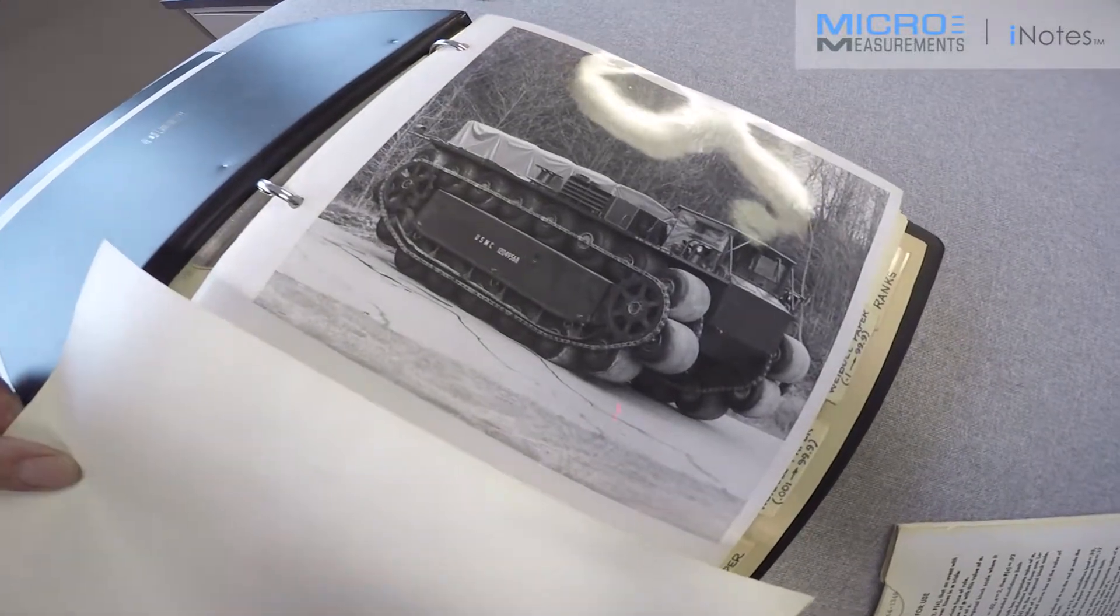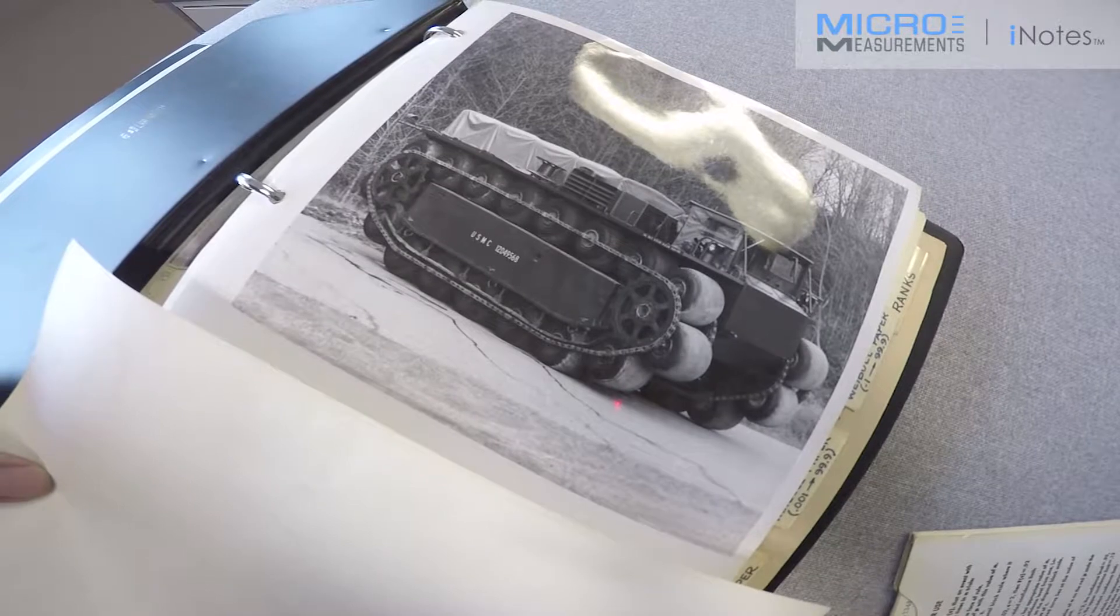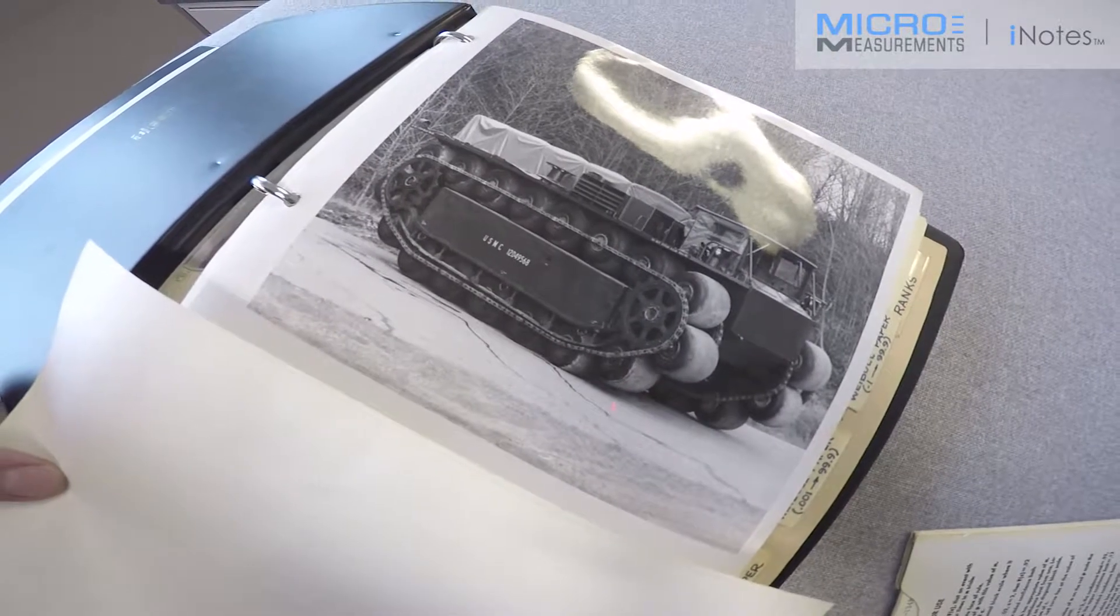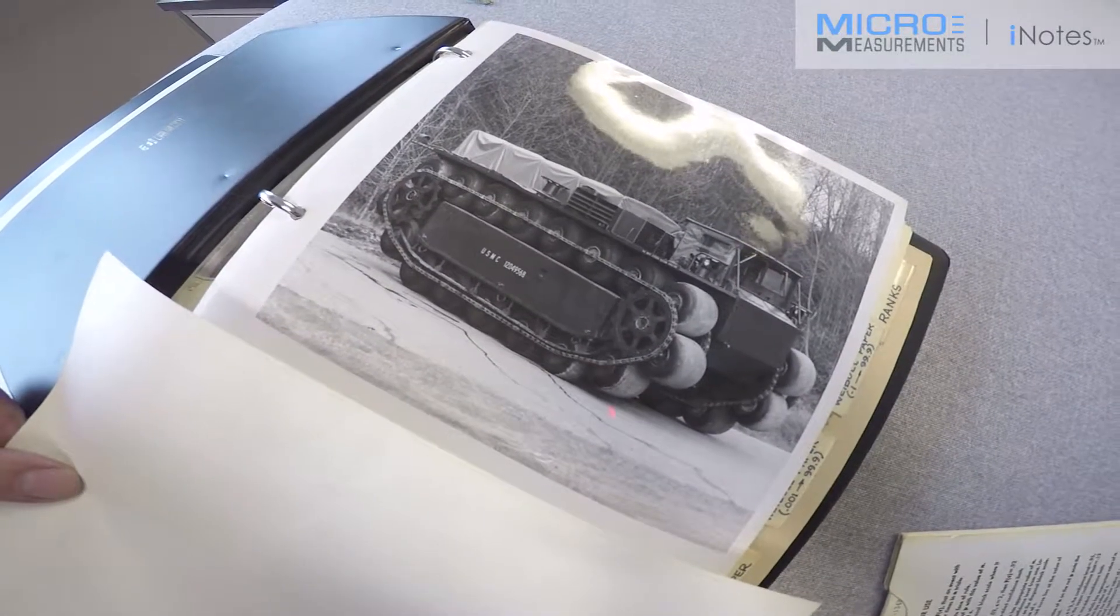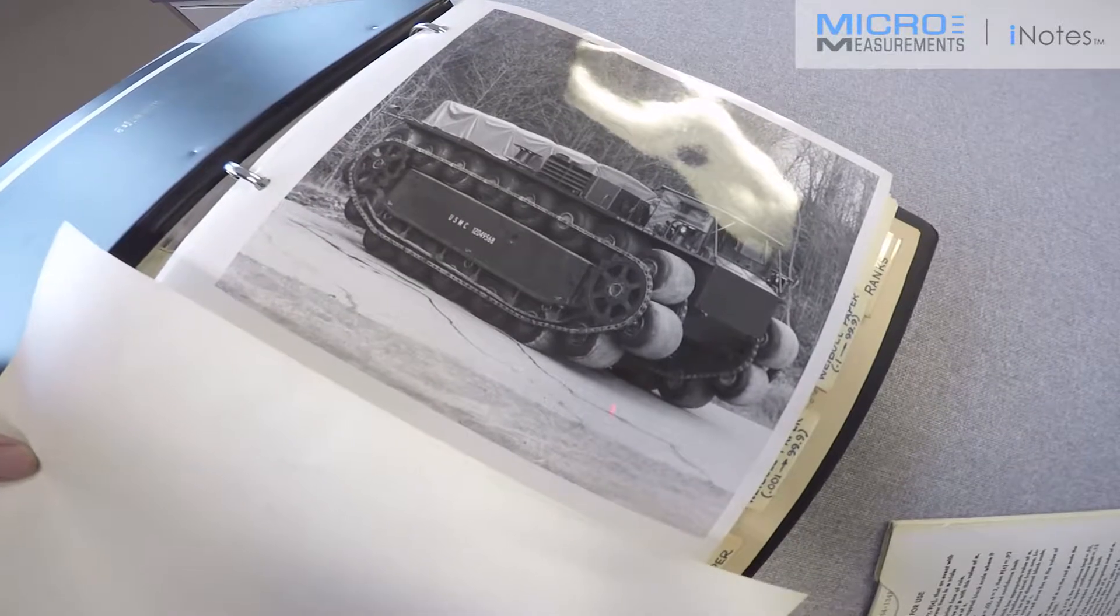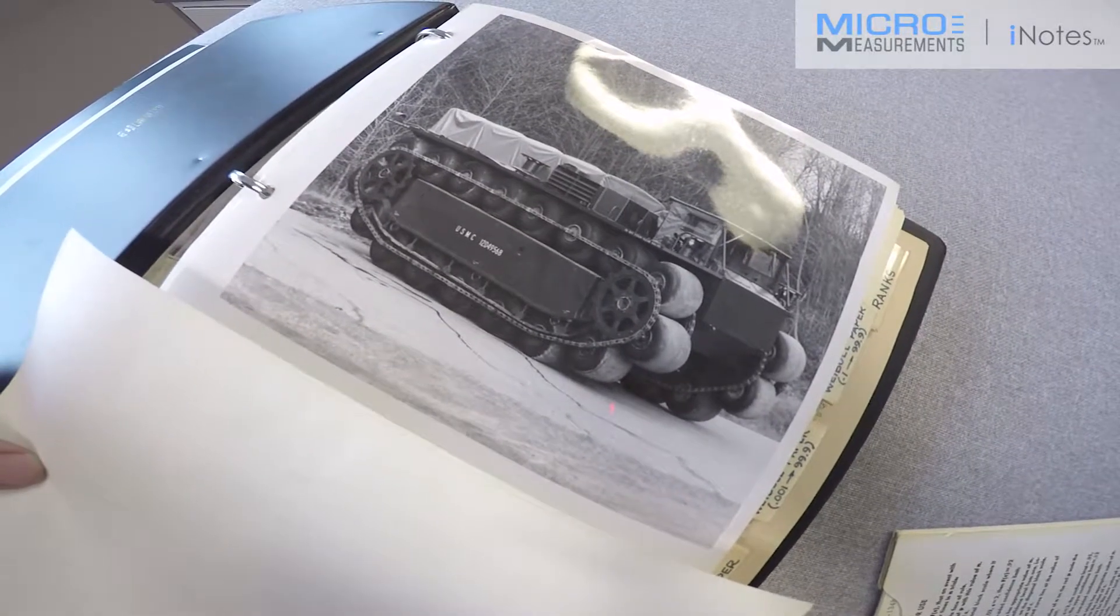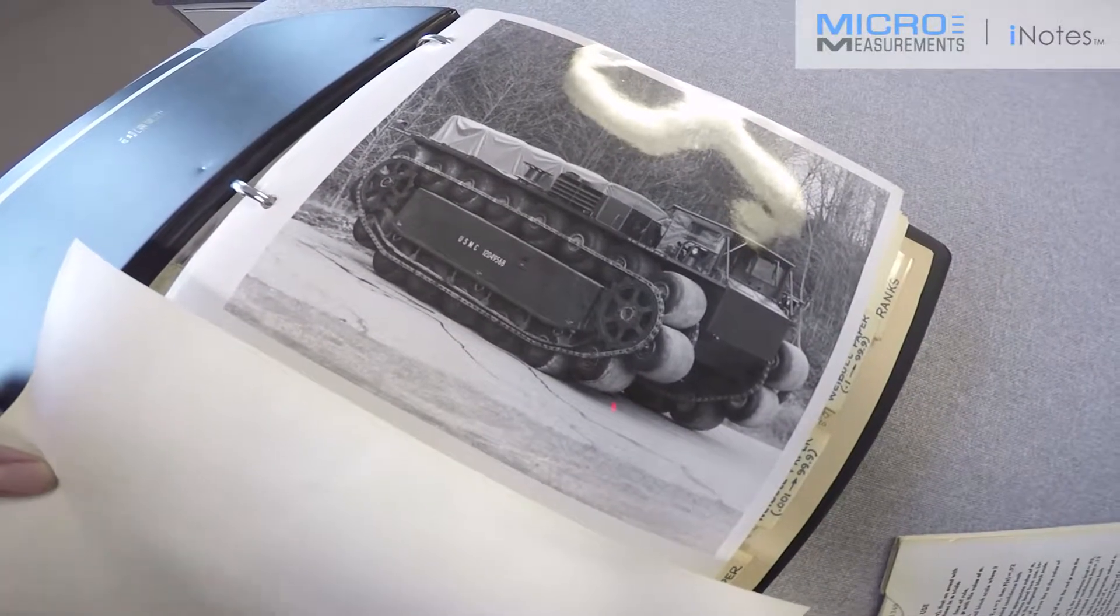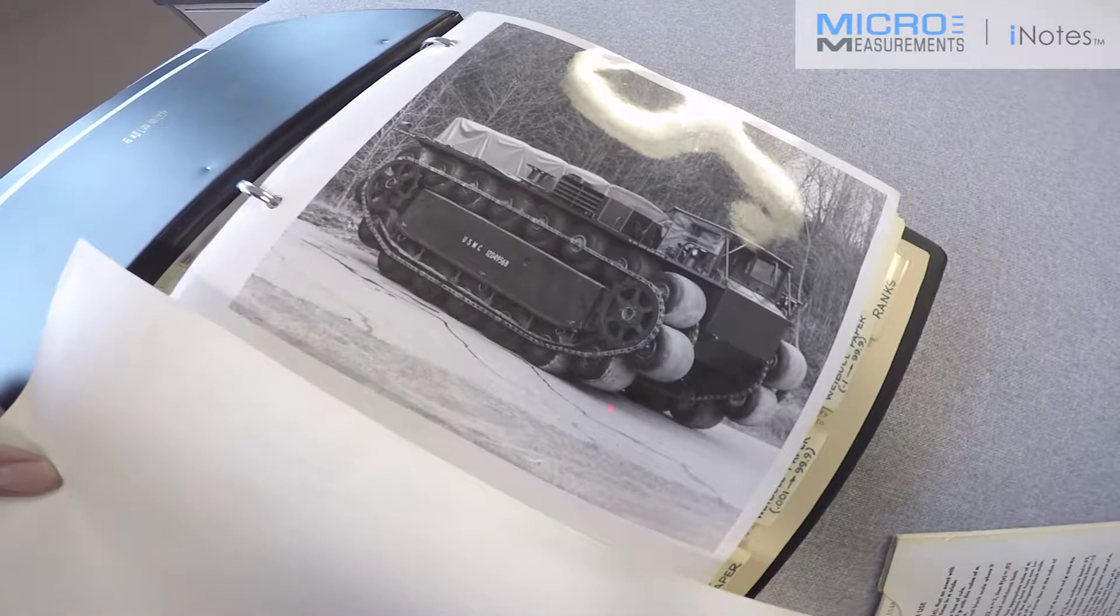We have what you might call an all-terrain vehicle here that was designed to go on hard surfaces or in the water or anything in between, including deep mud, by circulating inflatable airbags on a track chain.